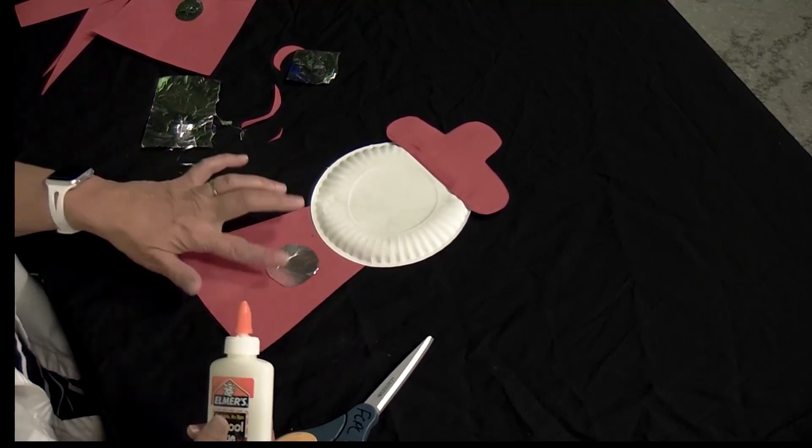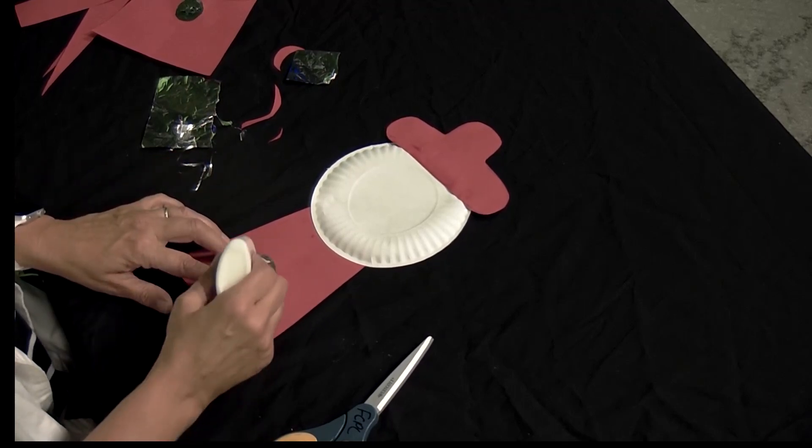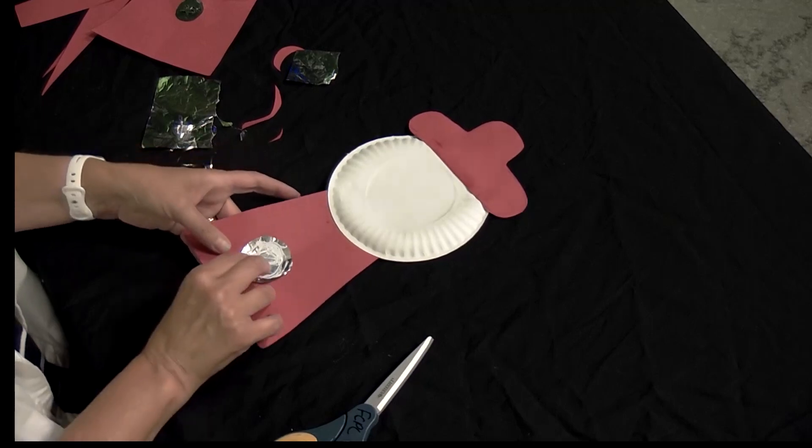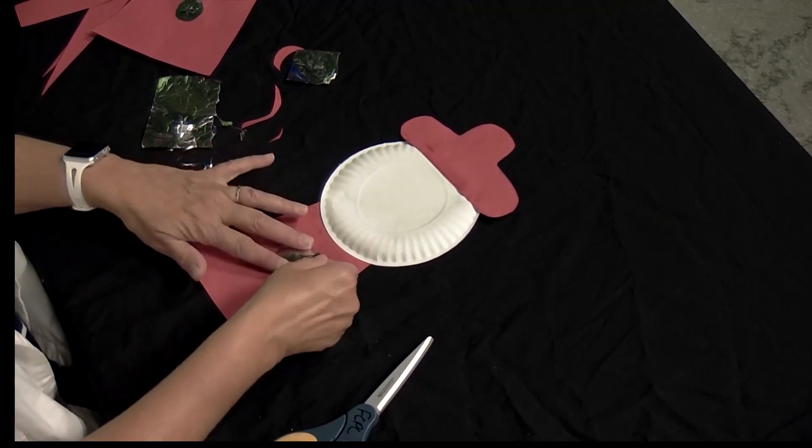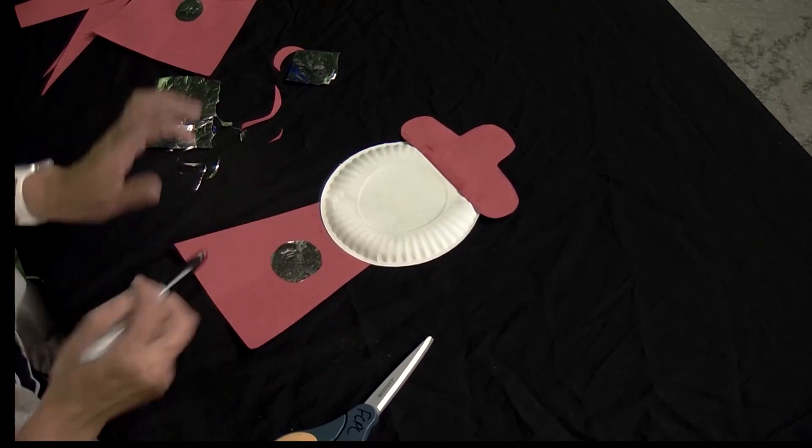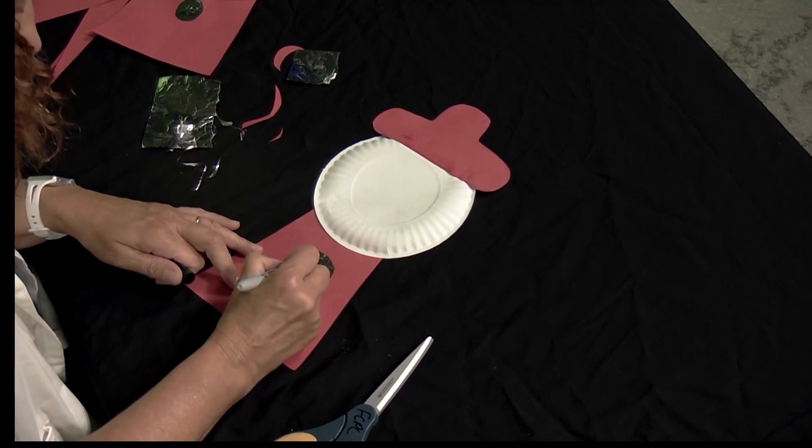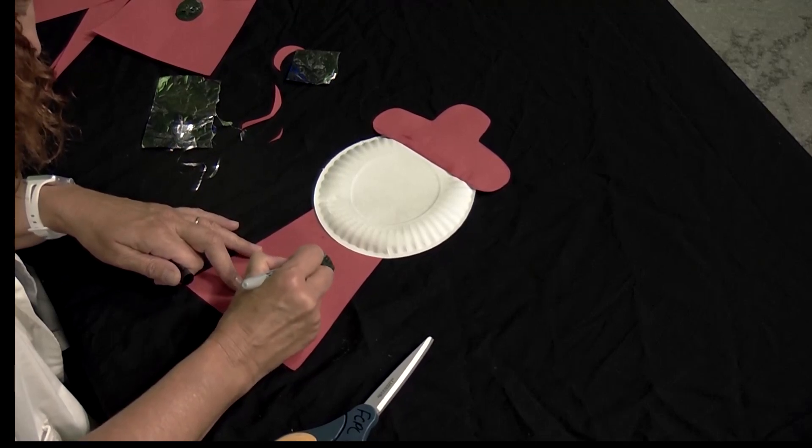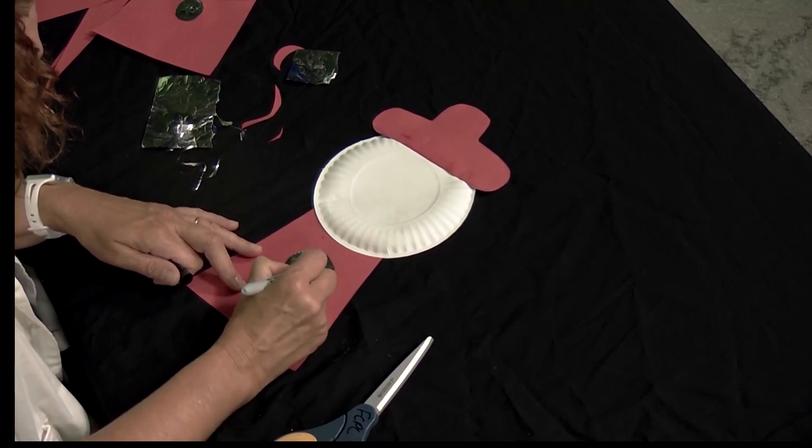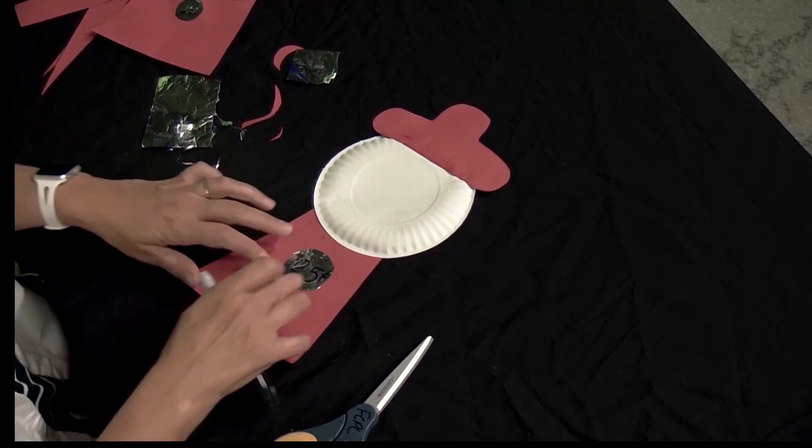I like the shiny side versus the dull side, so I'm going to glue on the dull side. Make sure you get to those edges so that it doesn't curl up. I'm going to put our little circle right here. If you have a Sharpie handy, you can write how much your bubble gum is going to cost. I'm just going to put 25 cents for one quarter.